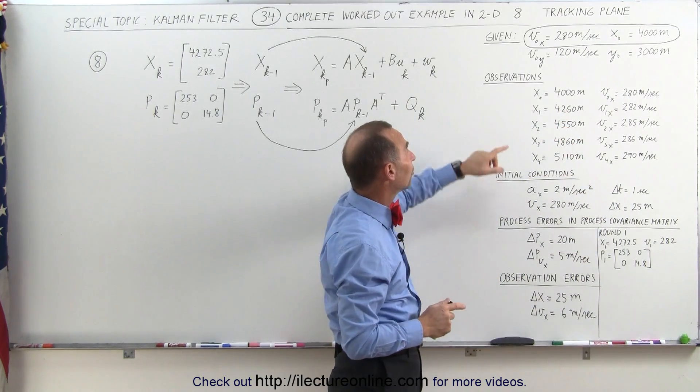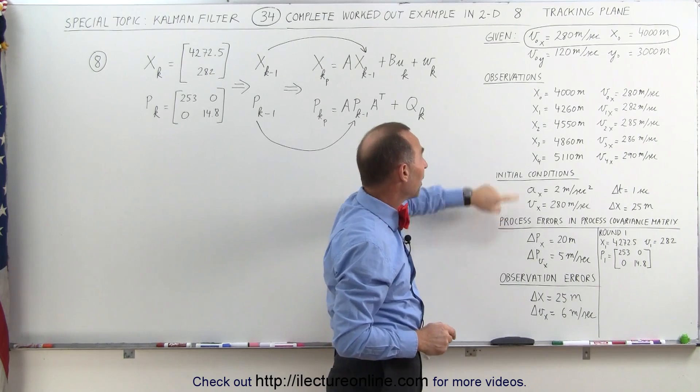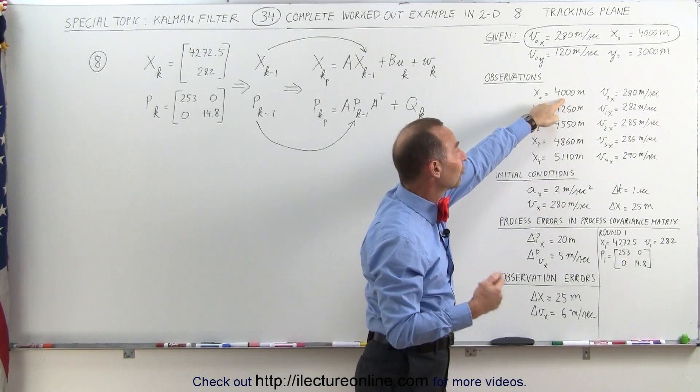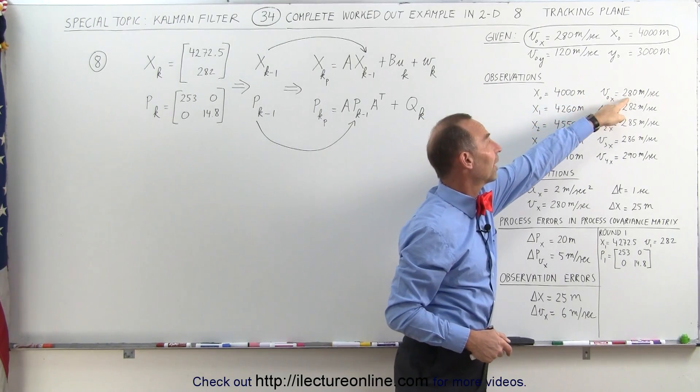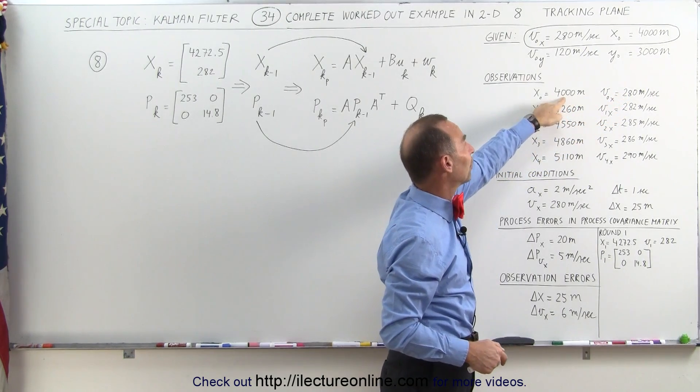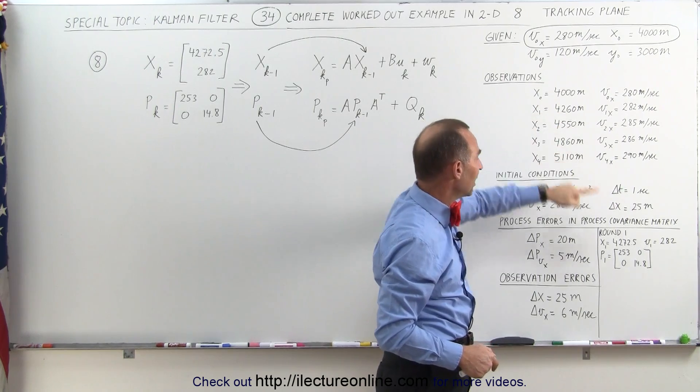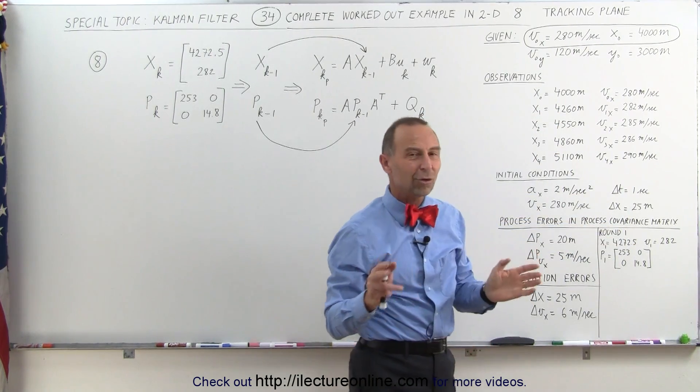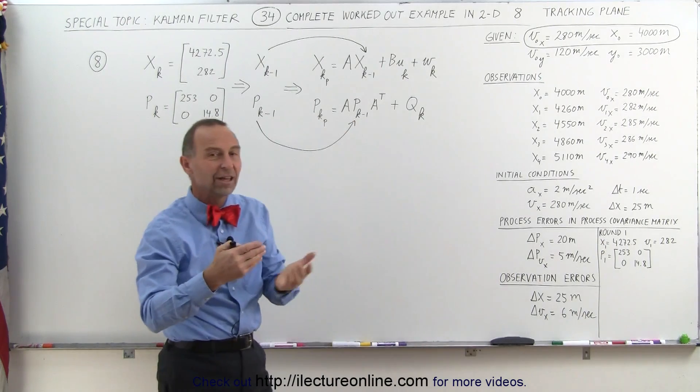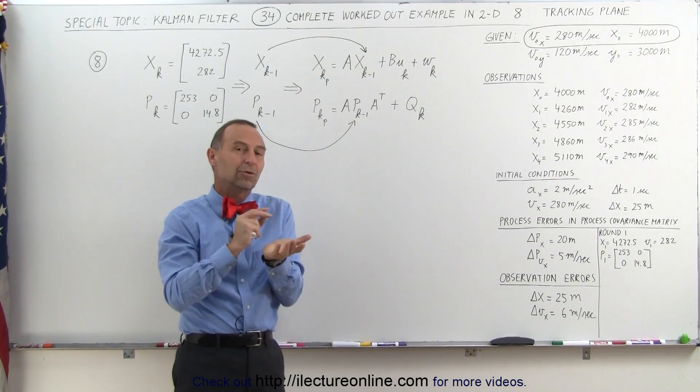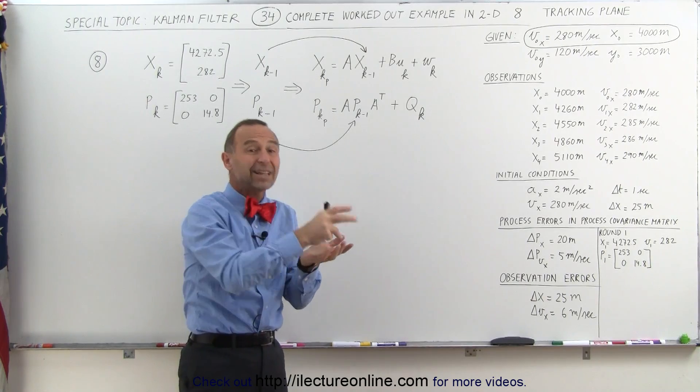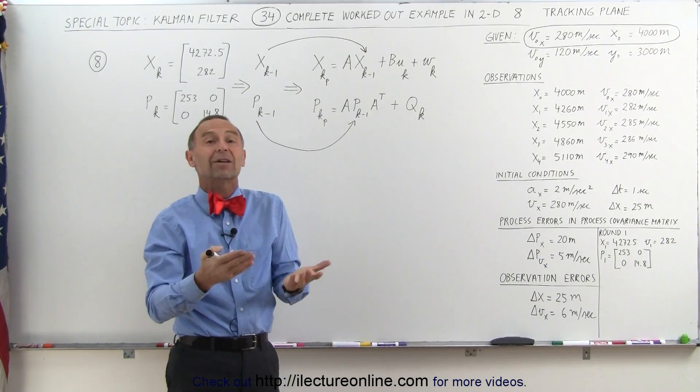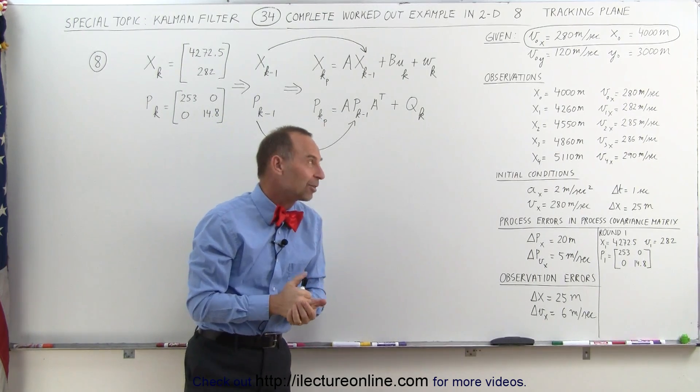The reason for that is because the predicted value, based upon the previous estimate for the position or the previous known value for the position and the velocity, would expect to find it at 4280. The measurement was at 4260 and the Kalman filter puts us at 4272. So that shows you how the Kalman filter adjusts the observed value to marry it up or to compare it to the predicted value, to give us the best and probably the most accurate value for the position of the object that we're tracking.